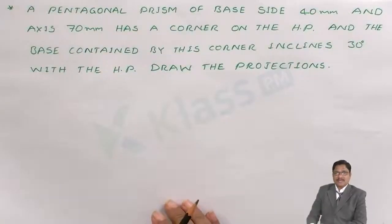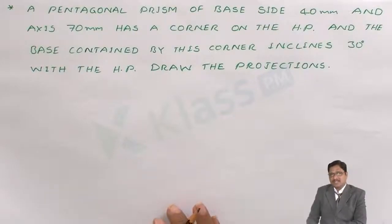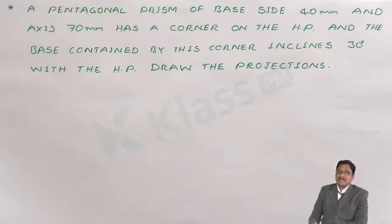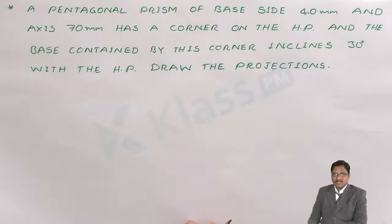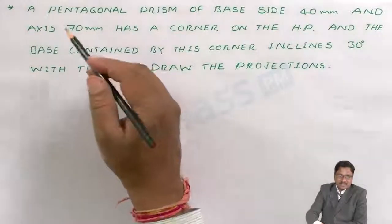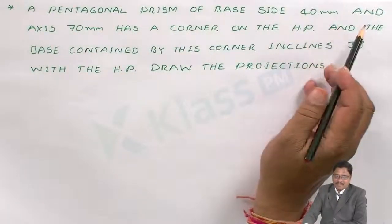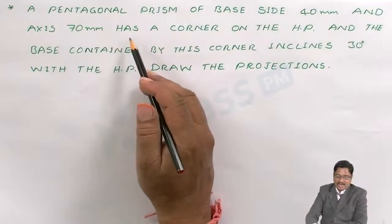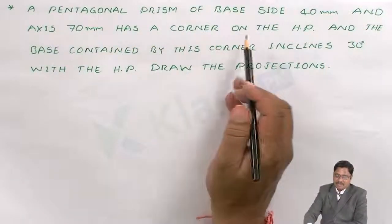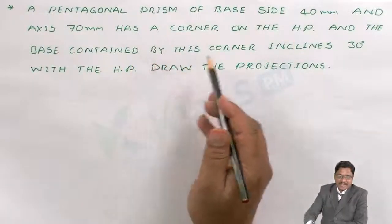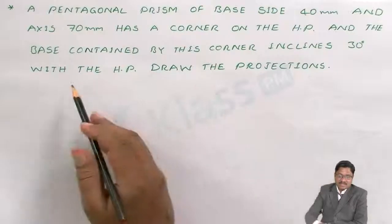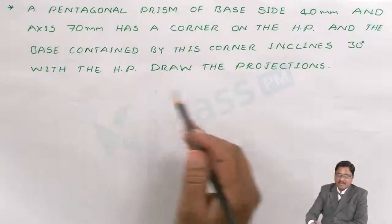Now let me discuss another problem. We will take the same similar condition of the previous problem, but we will change the resting condition. The previous problem had the resting condition given as the edge reference. Sometimes it may be asked to rest a corner also. A pentagonal prism of base side 40mm and axis 70mm has a corner on the HP, and the base contained by this corner inclines 30 degrees with the HP. Draw the projections.